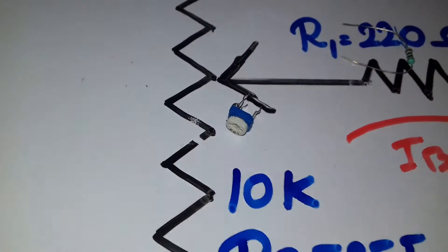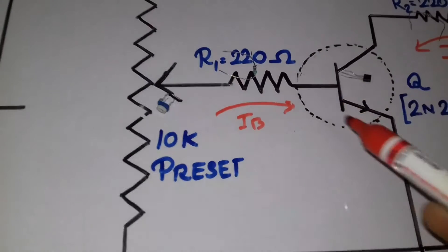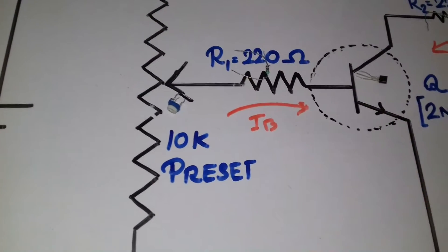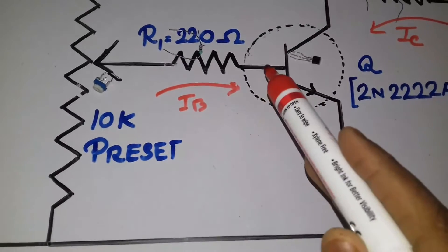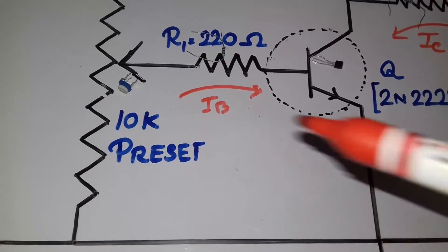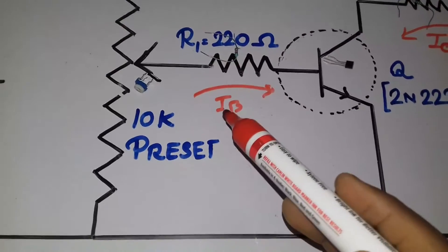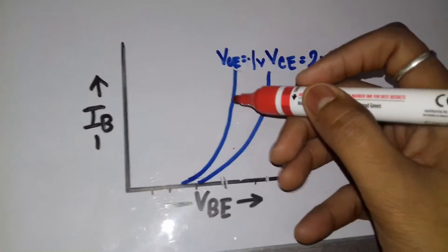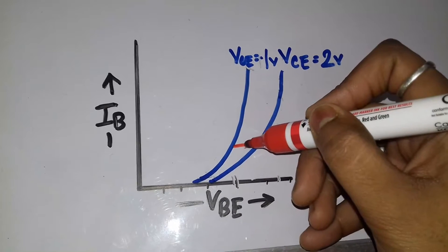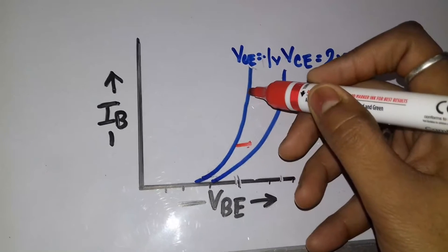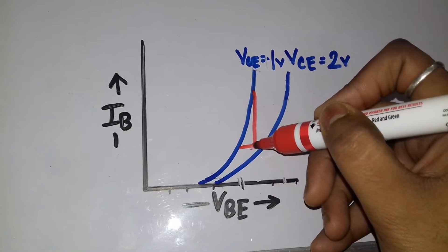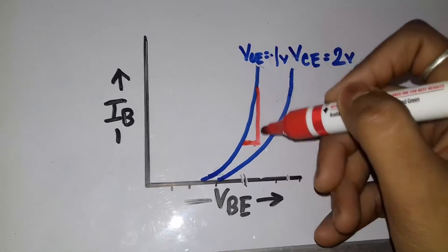I am using this preset resistor to change the base emitter voltage, that is the VBE. And if we can have a control on this base emitter voltage that is arising between these, then we have a huge control on this base current. And it is evident from the input curves. See here. If we can change this VBE a little, then it will change the base current drastically.